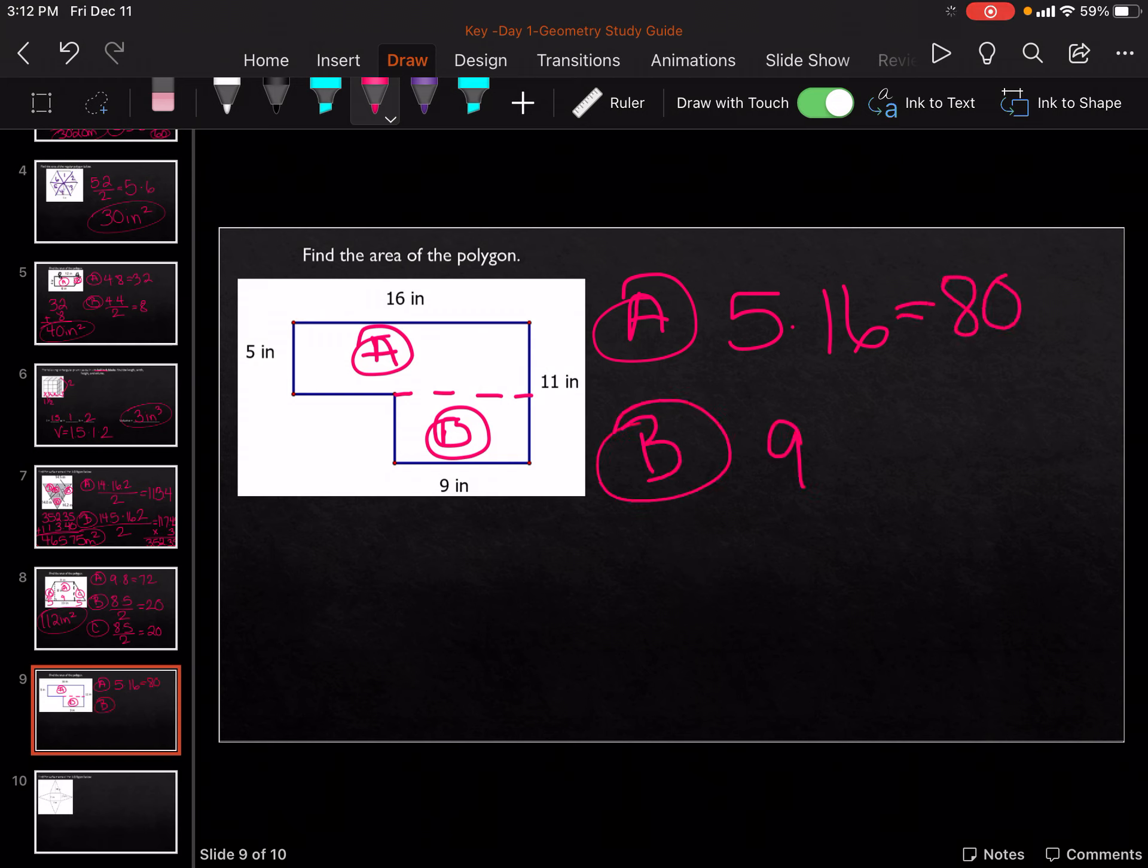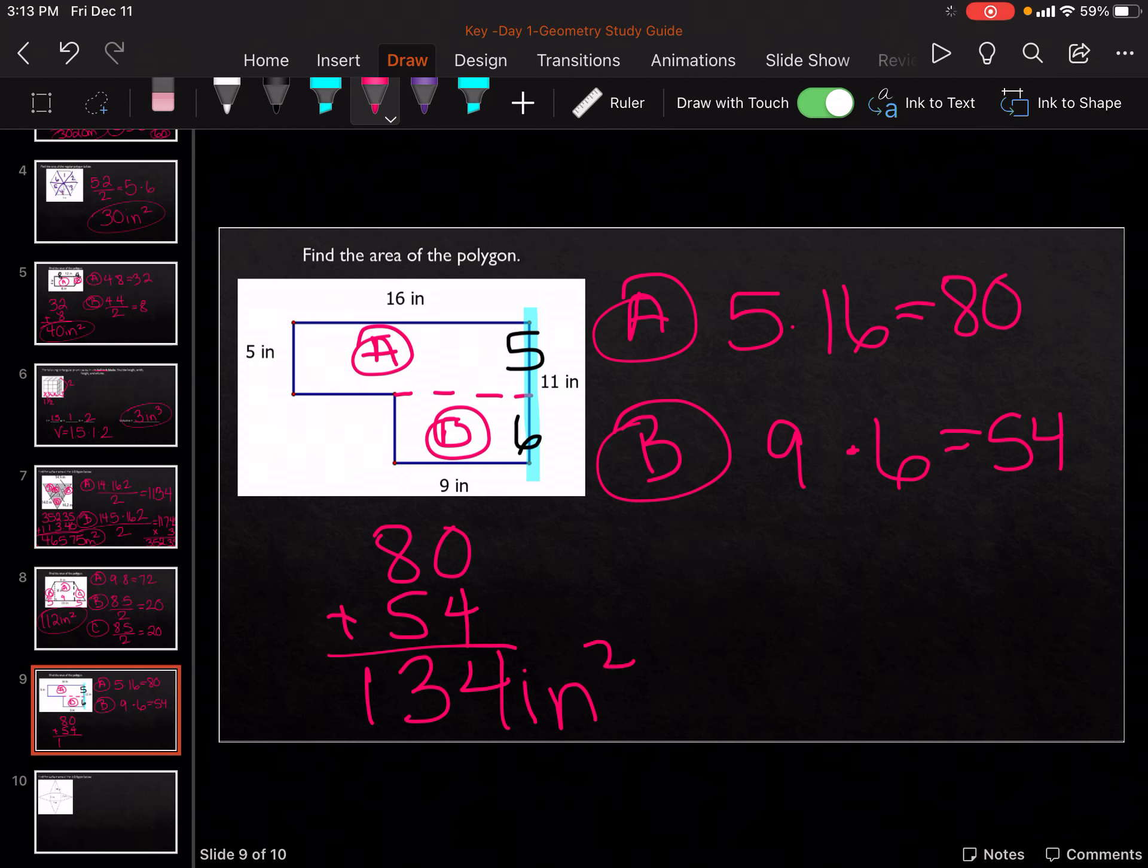Then for B, we know it's going to be 9 times something. So this whole length is 11. This part is 5. So 11 minus 5 gives me 6. So it's 9 times 6, which gets me 54. 80 plus 54 gets me 134 inches squared.